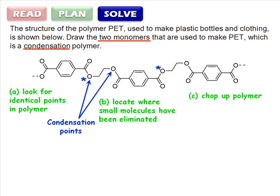The monomers are on either side of a condensation point in the middle of the repeat unit. Let's redraw them out below, including the eliminated water.